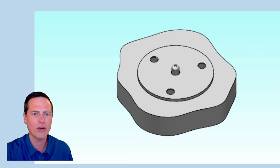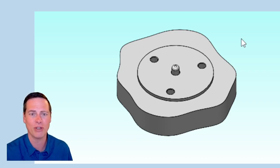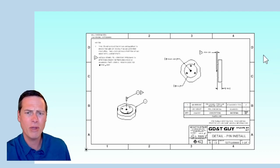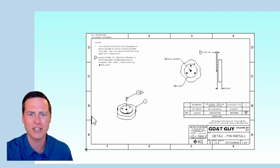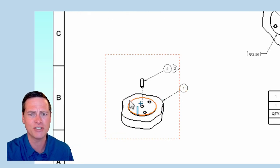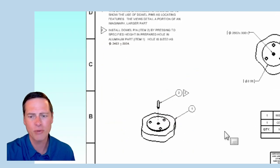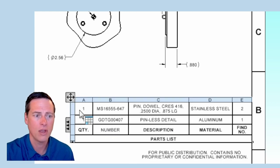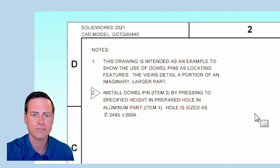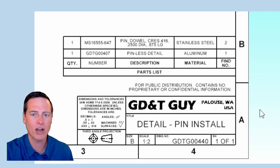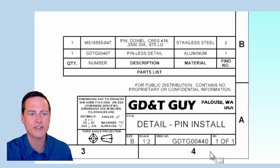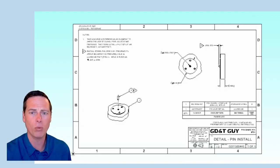But maybe your company wants to take over control of the anodization, or the pins for some reason. If you did that, it wouldn't be right to show the dowel pins on the drawing that you send to the machine shop, because their deliverable has no pins. You would want to make some kind of process control drawing for the pin installation — this is GDTG 00440. This one would have a parts list, and probably some instructions too.